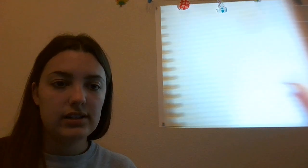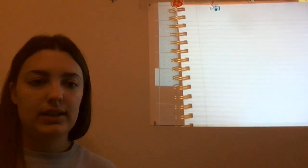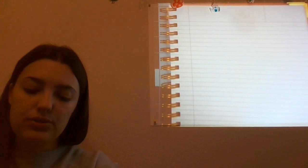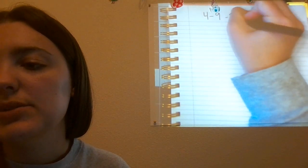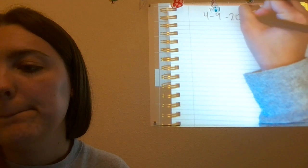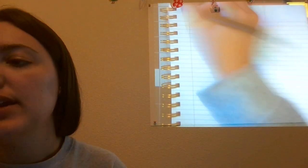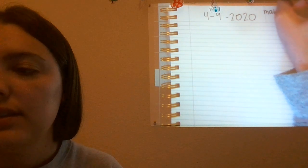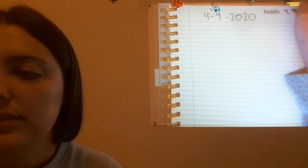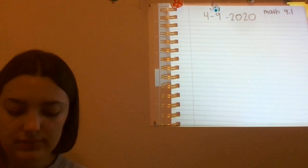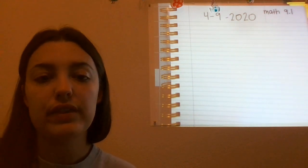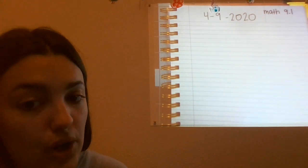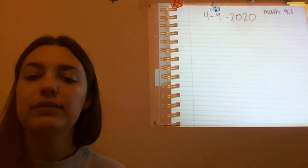Now for today, I still have my interactive journal out. Today we are going to write the date, which is 4-9-2020. And today we are starting notes on math 9.1. Chapter 9 is all about measurement — so how long things are. We are going to start by talking about some vocabulary.